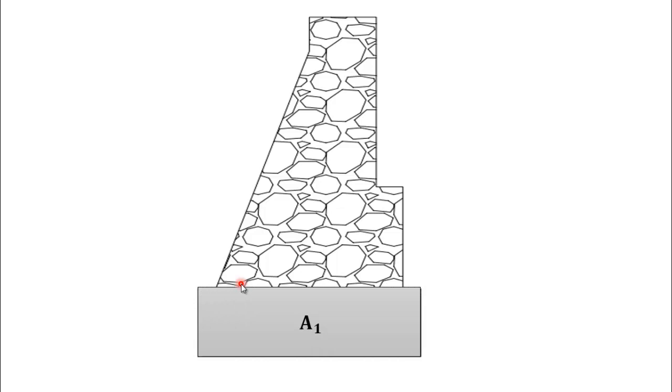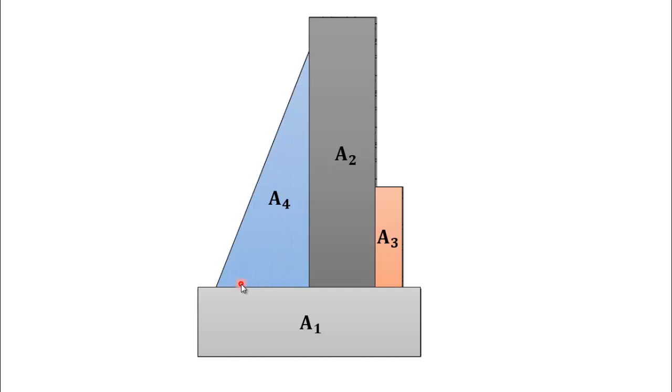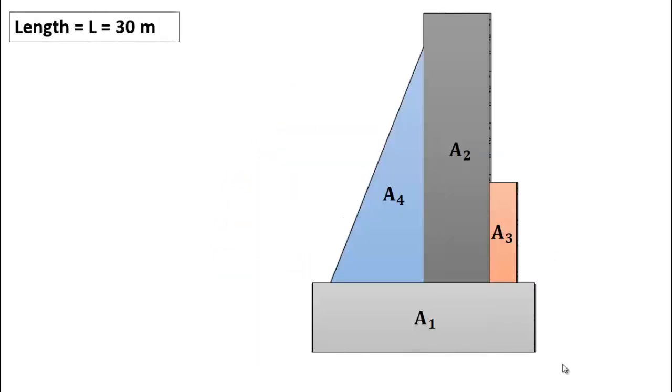Like I have divided this into 4 different areas like A1, A2, A3 and A4 which is triangular portion. Here you can see that 3 areas are rectangular and one area is triangular. The length given is 30 meter. The total cross-sectional area is represented by A.